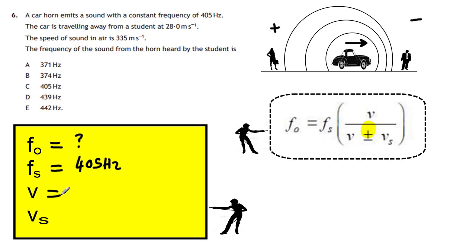Frequency of the sound is going to be 405 hertz. The speed of sound is V, in this case it's 335 meters per second, and the speed of the source, that's the speed of the car, is going to be 28 meters per second. So all we've got to do is put in the numbers and work out how f-naught is.